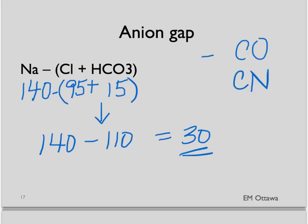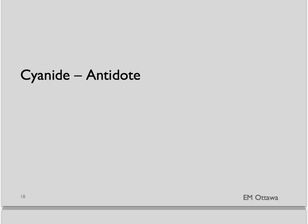You would have gotten the carboxyhemoglobin number either by blood gas or the non-invasive machine. To see if there is cyanide on board, there isn't a quick direct way to do this, so we do it indirectly by checking a lactate. If the lactate is elevated — usually more than 9 or 10 in a patient with cyanide toxicity — that usually means cyanide is on board. For carbon monoxide, you give 100% oxygen at normal pressure or through a hyperbaric chamber. For cyanide, there is a specific antidote, which we will not get into here.